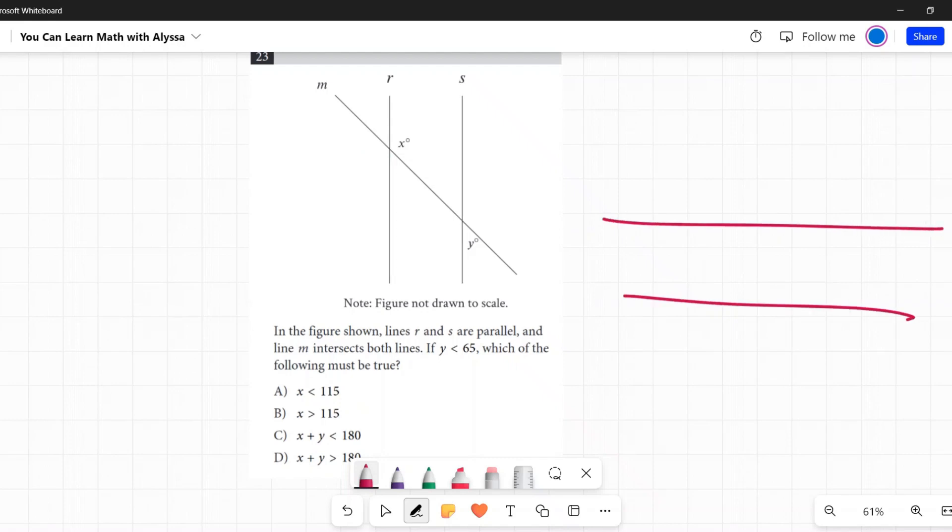Anytime you have parallel lines and a transversal, there's a whole bunch of relationships that happen. If you want more details about why this is true, I have videos on this below, but for this purpose I'm just going to tell you the facts. These four angles are all the same, and these four angles are all the same.